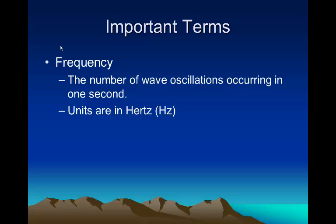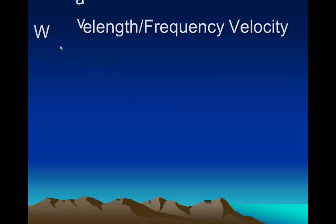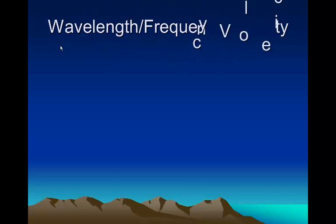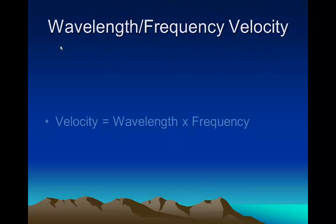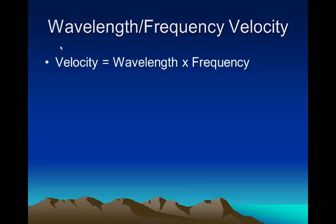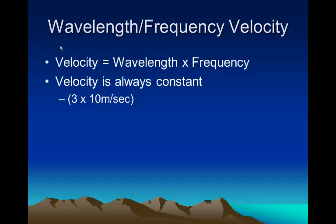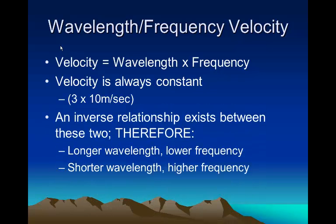Wavelength and frequency velocity. Velocity equals wavelength times frequency. The wave velocity is always constant, 3 x 10 millimeters per second. An inverse relationship always exists between these two. Therefore, the longer the wavelength, the lower the frequency, or the shorter the wavelength, the higher the frequency.